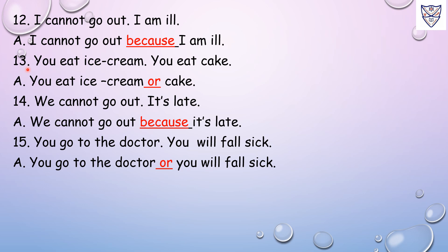Number 13: You eat ice cream. You eat cake. Answer: You eat ice cream or cake. Here in the sentence we can see choices are given — ice cream and cake. When we talk about two options, it means choice, so we have joined the sentence using the conjunction 'or'.